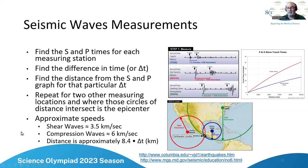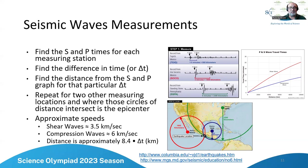A few things to remember: shear waves travel about 3.5 km/s, compression waves about 6 km/s. The distance in kilometers is approximately 8.4 times delta T. Always go by the curves, but this is a good way to check whether your answer is in the ballpark.